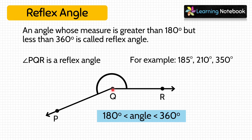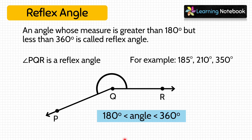Some other examples of reflex angles are angles measuring 185 degrees, 210 degrees, and 350 degrees. All these are reflex angles.